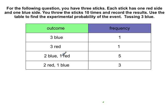All right, going to the next question. For the following question, you have three sticks. Each stick has one red side, one blue side, and one blue side. You throw the sticks 10 times and record the results. Use the table to find the experimental probability of the event tossing 3 blue.